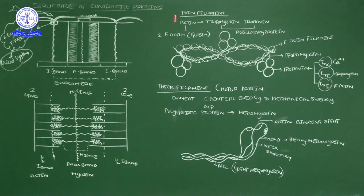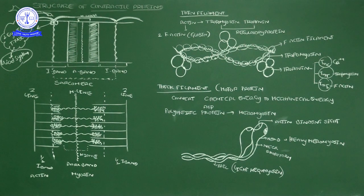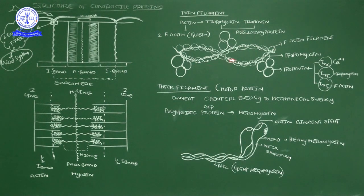Let me come to the structure of thick and thin filaments. First, the thin filament is made up of three important proteins: one is actin, second is tropomyosin, and third is troponin. These are the structural components of the thin filament. Among these, tropomyosin and troponin together are called regulatory proteins.